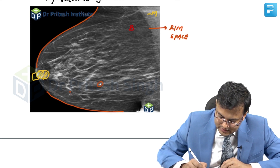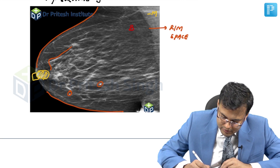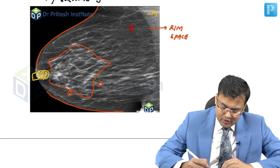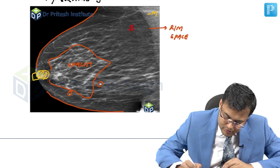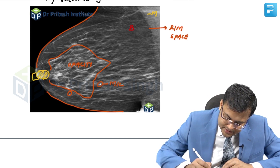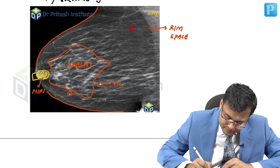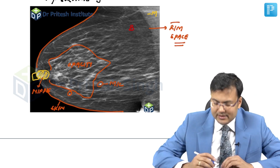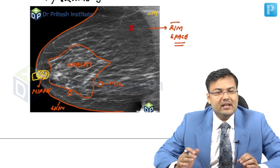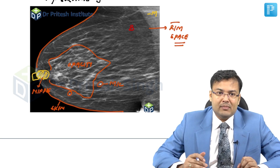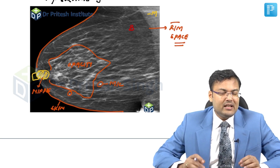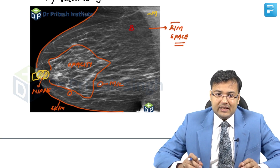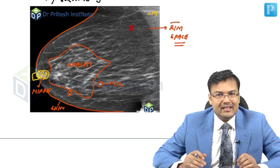We also look for microcalcifications and for the opacity. So we have to look at: opacity, microcalcification, nipple, breast skin, and retromammary space. On the basis of these features, we can make the diagnosis. In this case, since there is irregular margin of opacity, microcalcification, and nipple retraction, most probably it is malignancy.